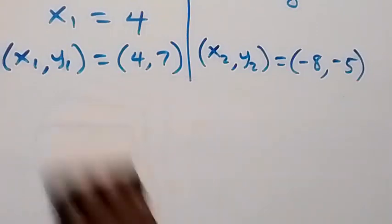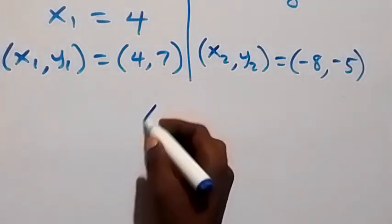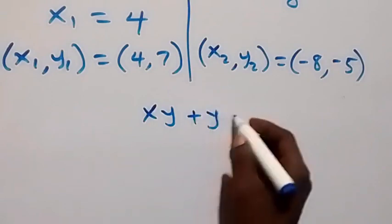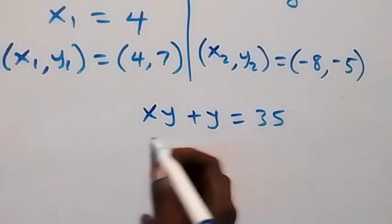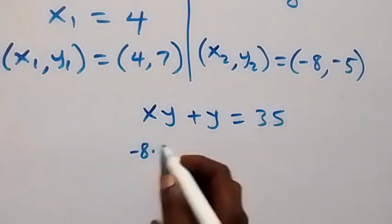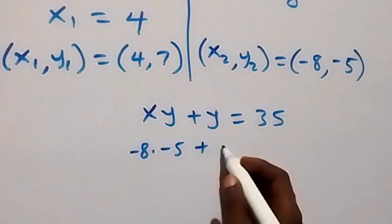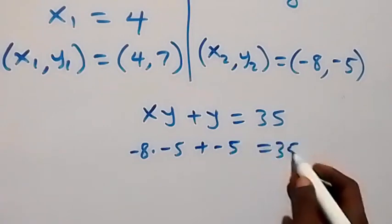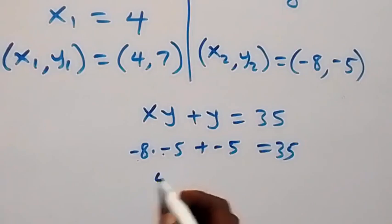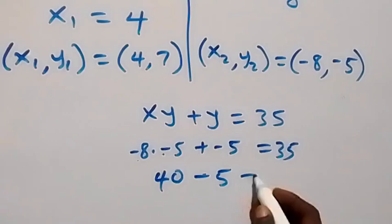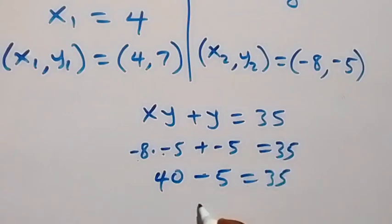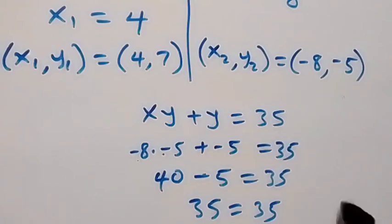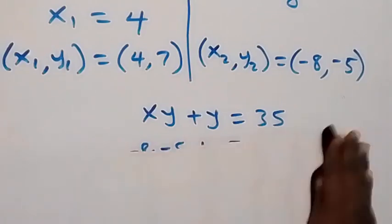Also checking the second solution in equation 2: xy plus y equals 35. x is minus 8, y is minus 5: minus 8 times minus 5 plus minus 5 equals 40 minus 5, which equals 35. Left hand side equals right hand side. Hence, we have these two sets of solutions satisfying this given problem.